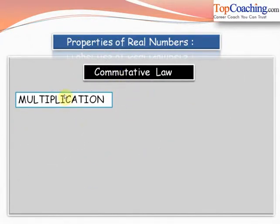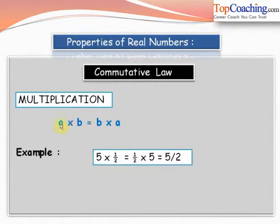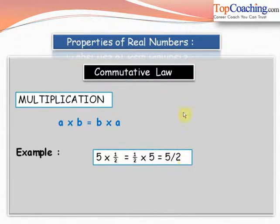The next is the commutative law of multiplication. If we have two real numbers a and b, then a into b equals b into a. Changing the order does not change the product. For example, with a equal to 5 and b equal to 1/2, then 5 into 1/2 equals 1/2 into 5, and both yield 5/2. Therefore, the commutative law of multiplication holds for real numbers.